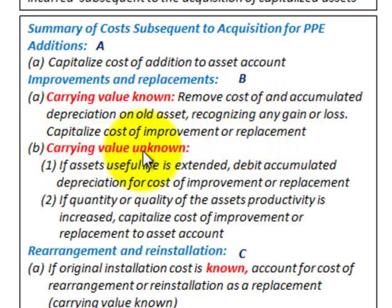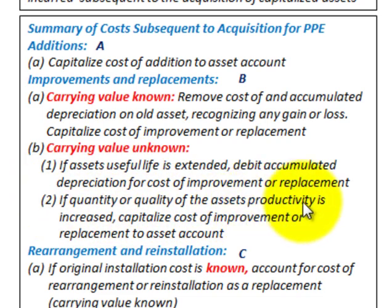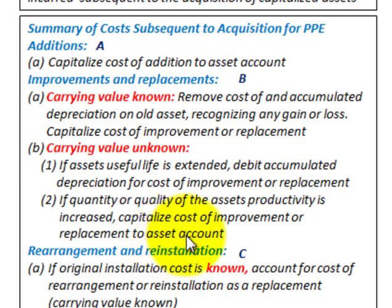Where the carrying value is unknown: if the asset's useful life is extended, you debit accumulated depreciation for the cost of the improvement or replacement, thereby reducing that account. If the quantity or quality of the asset's productivity is increased, you capitalize the cost of the improvement or replacement to the asset account, increasing your asset account.